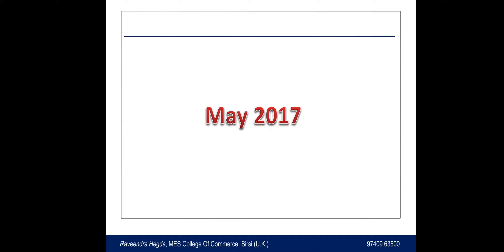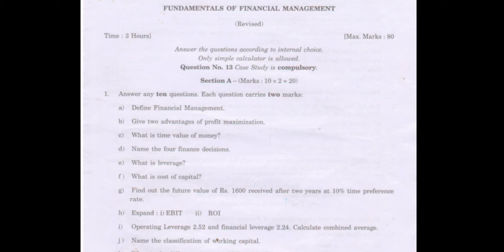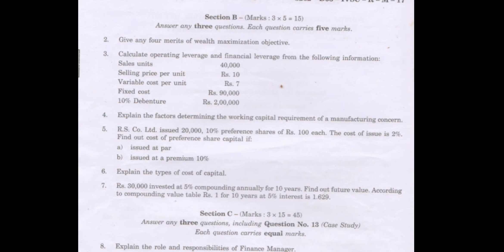Now the paper is 2017 — May 2017. The first question is to define financial management. The second question is to give two advantages of profit maximization. Another question is to name the four financial decisions. Questions 7th, 9th, and 12th are problems. So in this 2017 paper there are three problems. Section B is to give four merits of wealth maximization objectives, covering wealth objective and profit maximization objectives.